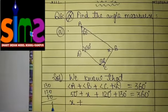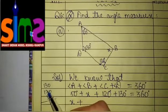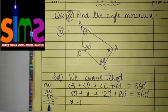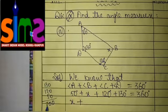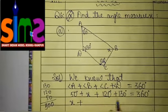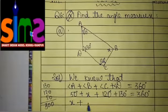When we add the zeros, we get 0. 3 plus 2, 5. 5 plus 5, 10. Again, 0. Carry 1. 1 plus 1, 2. 2 plus 1, 3. So the addition of 130, 120 and 50 degree is 300.